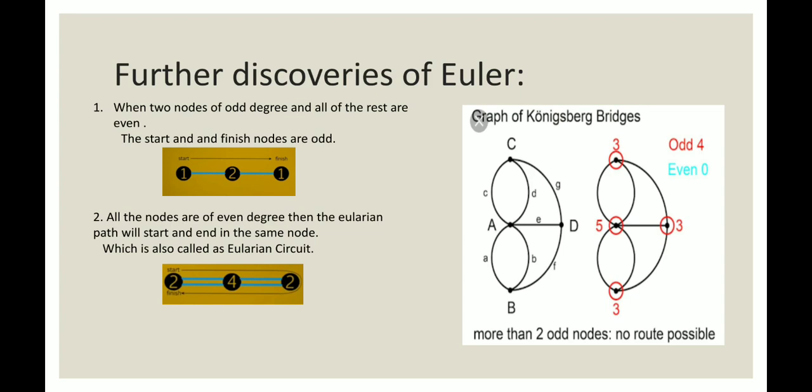One and one, it is an odd node but in between it has even that is two. So this is the first law where it will start with the first and end in the second node that is at the last. This has a different starting point and different ending point.